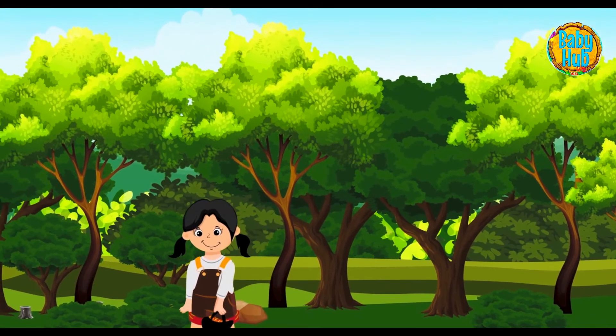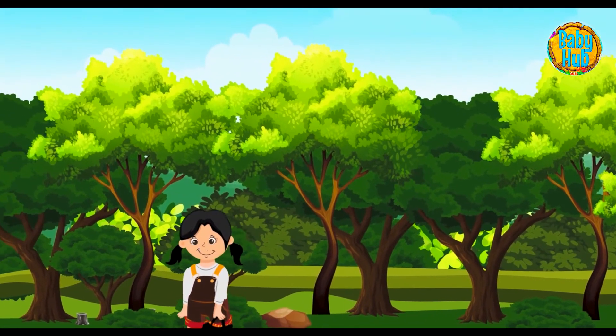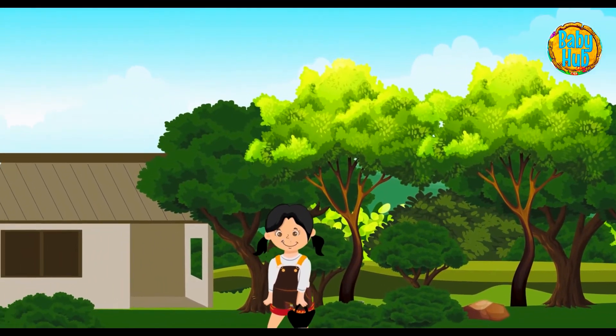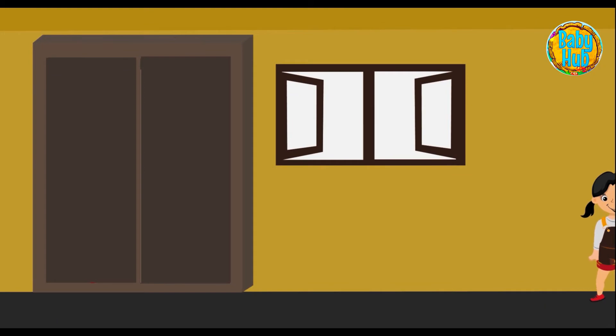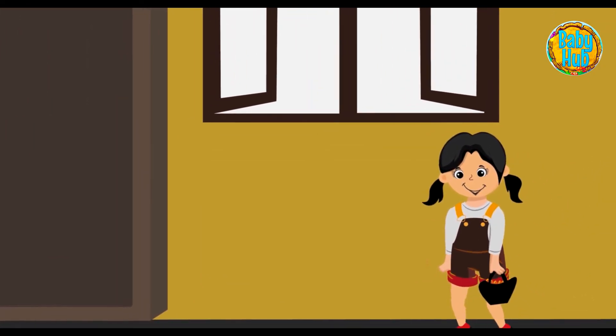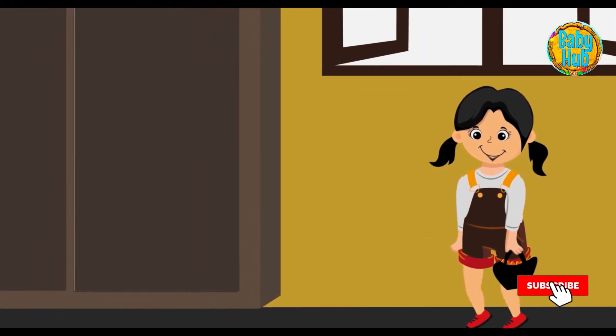When Little Red Riding Hood arrived at her grandmother's house, she noticed that the door was open. The girl went in and went to the bedroom. Usually, she felt very happy at her grandma's but that day something felt different.